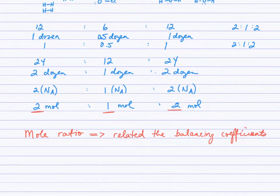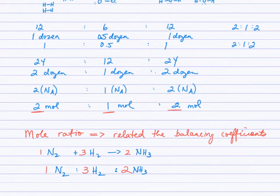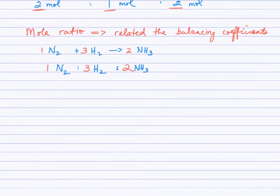If we had a different reaction, like the synthesis of ammonia from its elements, when we balance this equation, the ratio of N₂ to H₂ to NH₃ particles follows the balancing coefficients of 1:3:2. That's the idea of mole ratio - using balancing coefficients to relate amounts of reactants and products.